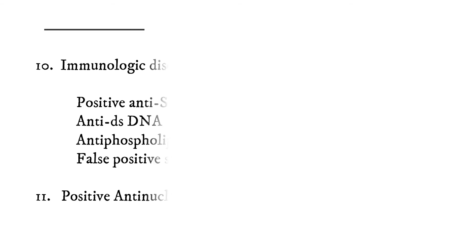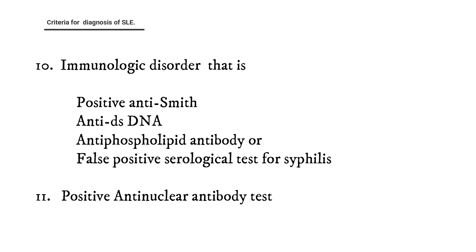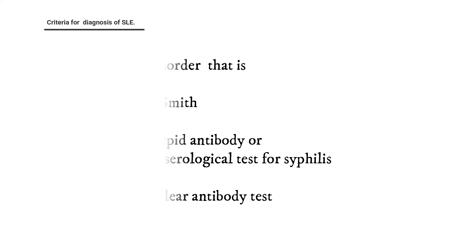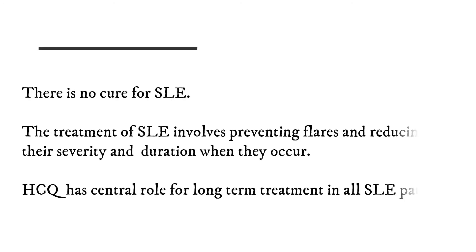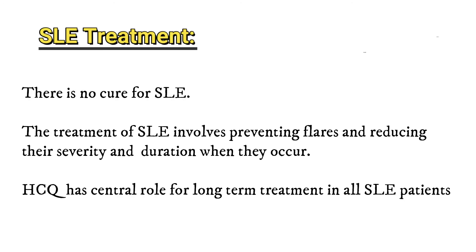Immunologic abnormalities include positive anti-Smith, anti-dsDNA, anti-phospholipid antibody, or false positive serological tests for syphilis. Positive ANA. There is no cure for SLE. The treatment of SLE involves preventing flares and reducing their severity and duration when they occur.